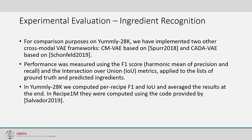Performance was measured using F1 and Intersection over Union (IoU) metrics applied to ground truth and predicted ingredient lists. In YUMMLY 28K, per-recipe F1 and IoU metrics were computed and averaged. In Recipe 1 Million...